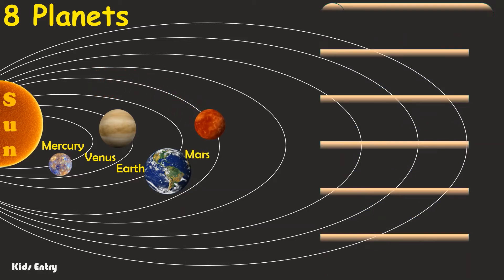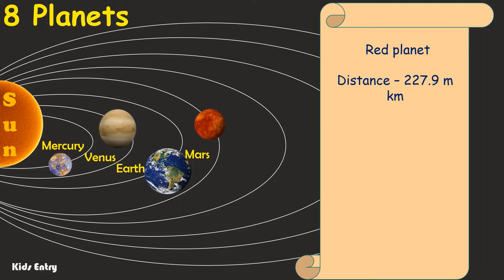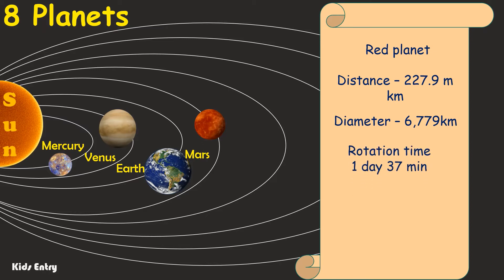Mars: it's called the red planet. Distance from the Sun to Mars is 227.9 million kilometers. Its diameter is 6,779 kilometers. One day on Mars lasts 1 day, 37 minutes. One year on Mars lasts 687 Earth days. It has two moons.